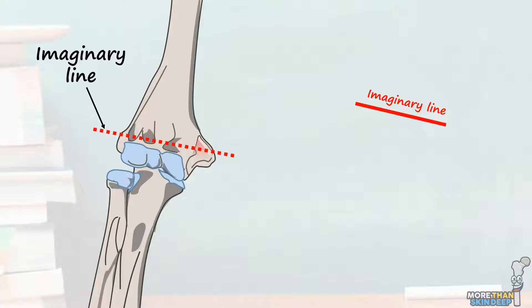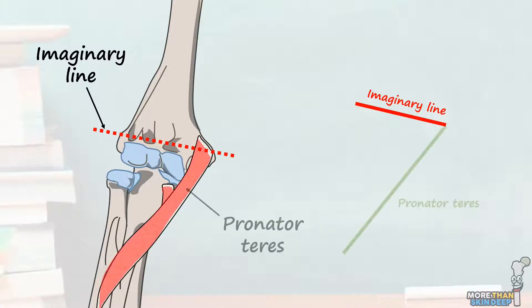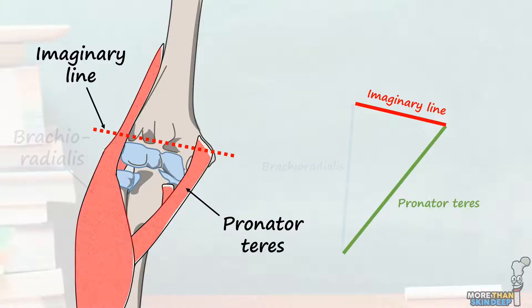Running from the medial aspect of the distal humerus and upper ulna, and crossing the forearm to insert into the lateral radius, is the pronator teres muscle. The lateral part of this muscle forms the medial border of the cubital fossa. On the other side, running from the lower lateral humerus all the way down the forearm to insert into the distal radius, is the large brachioradialis muscle. The medial part of brachioradialis forms the lateral border of the cubital fossa.